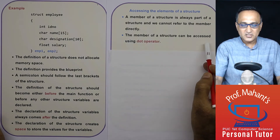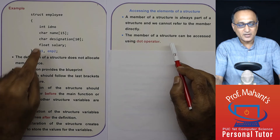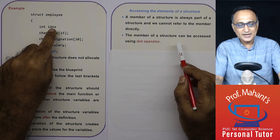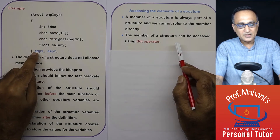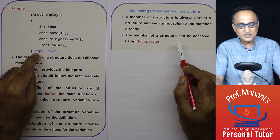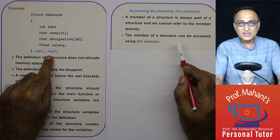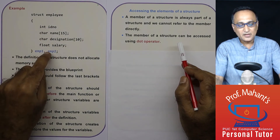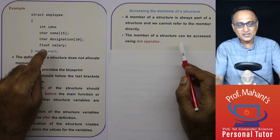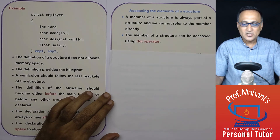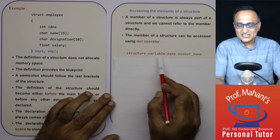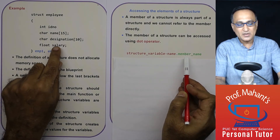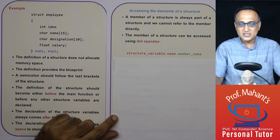The member of a structure can be accessed using the dot operator. For example, if I want to refer to ID number from EMP1, I say EMP1.IDnumber, EMP1.name, EMP1.designation, EMP1.salary. Similarly, if the group belongs to EMP2, then I say EMP2.IDnumber, EMP2.name, EMP2.designation, EMP2.salary.